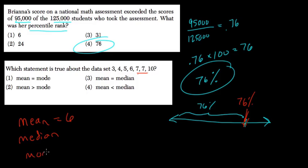And again, the mode is 7. So the mean equals the median, which is choice 3. And that's the only correct one, because the mean is not less than the median. The mean is not greater than the mode. In fact, the mode is greater than the mean, and the mean and mode are not equal. All right, hope this helped.